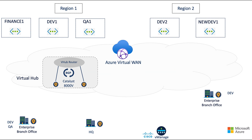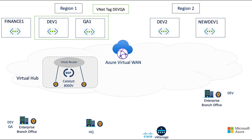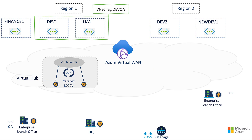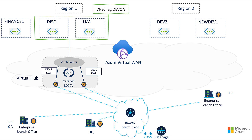Using automation and APIs, we can take a subset of our workload VNets and logically group them using a VNet tag. We can now declare a connectivity intent for that tag, and in doing so, VManage will connect the tagged VNets to the virtual hub. The virtual hub will learn the tagged VNet prefixes and use BGP to exchange those routes with our Catalyst 8000v routers inside the virtual hub. This is where our separate secure SD-WAN control plane really shines.